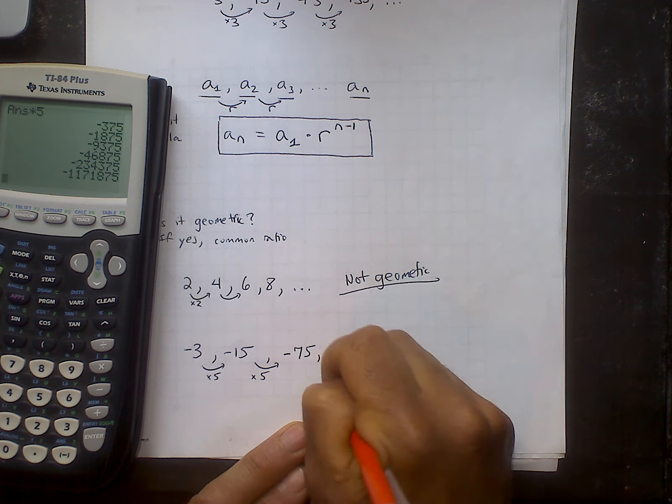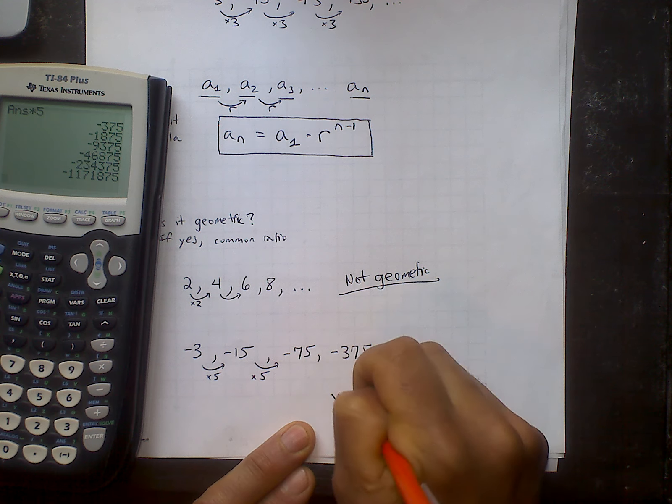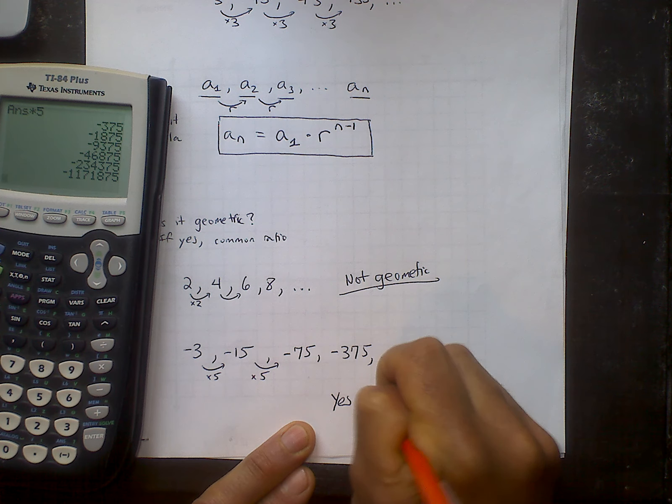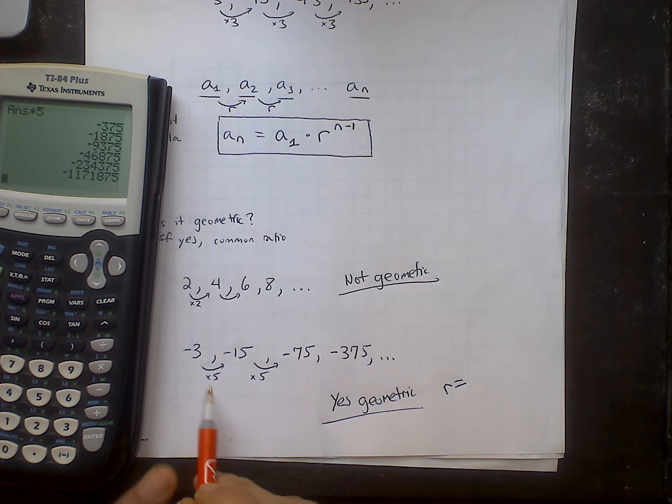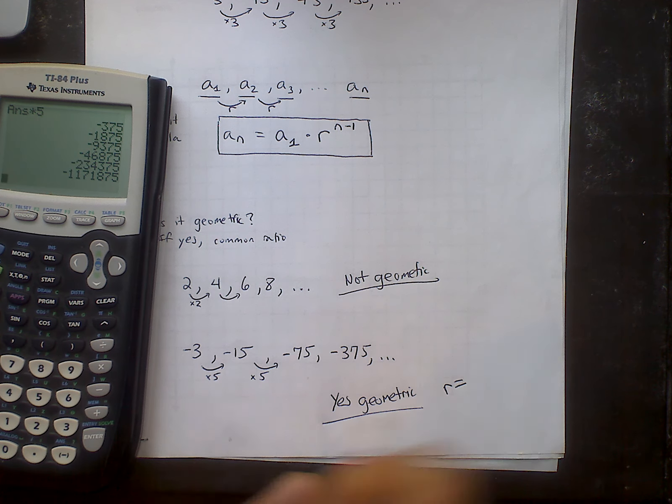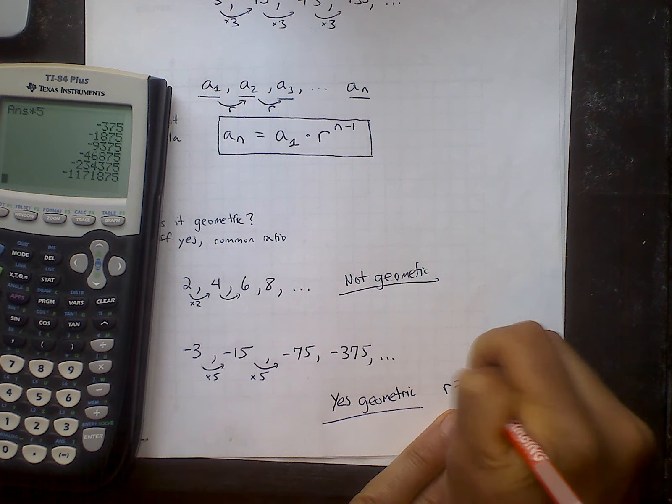So yes, this is geometric. The common ratio is the number that I'm multiplying by to get to the very next one. So I'm going to call that r. r equals five.